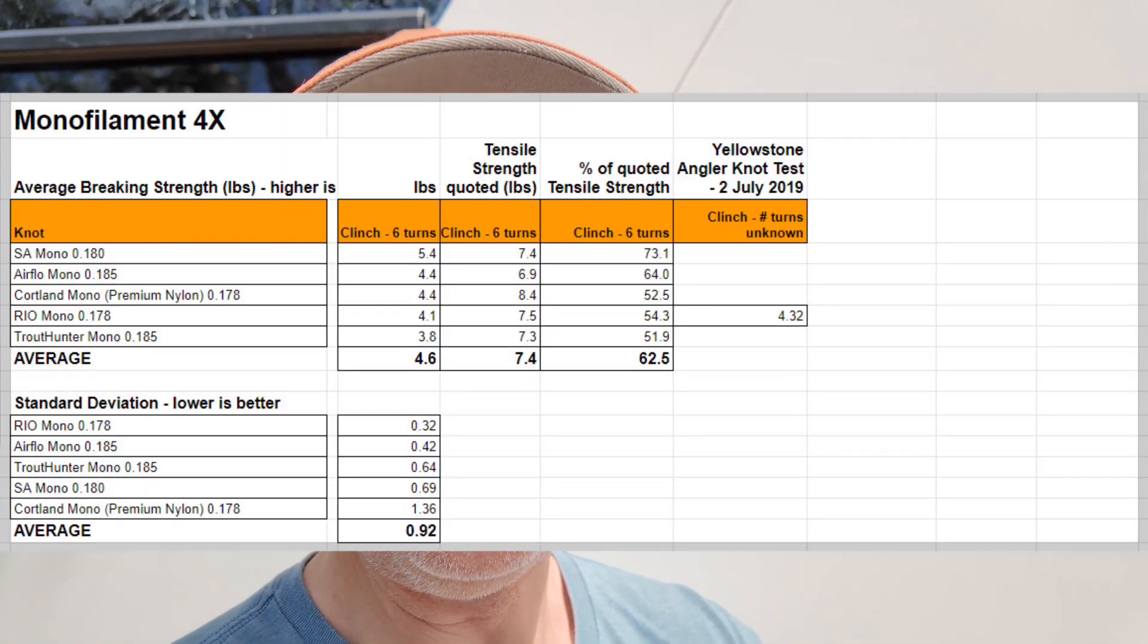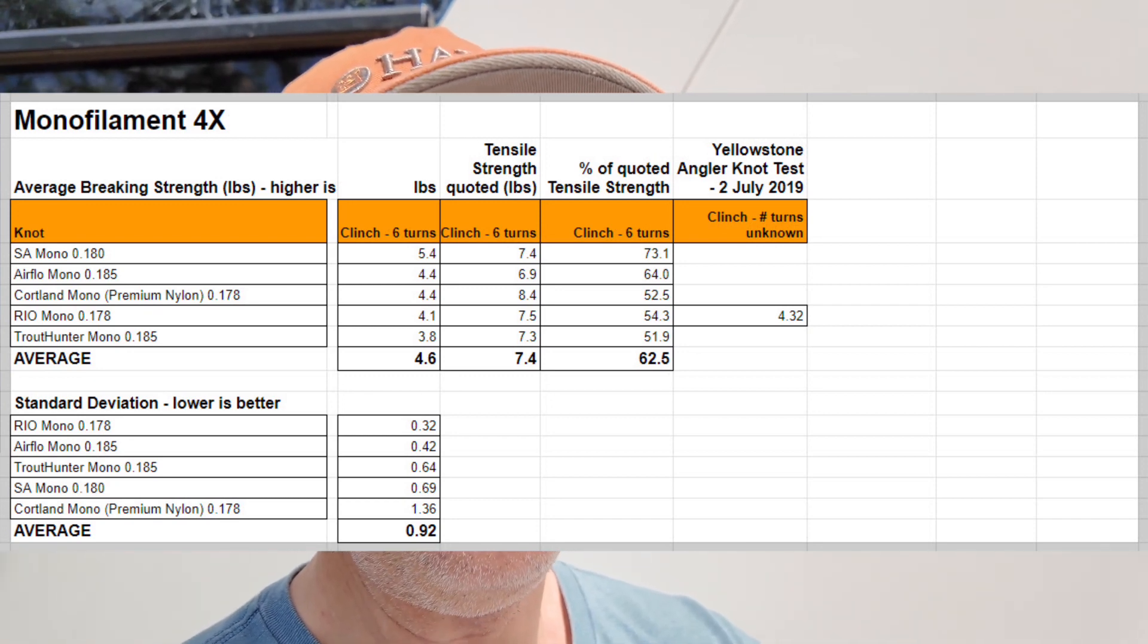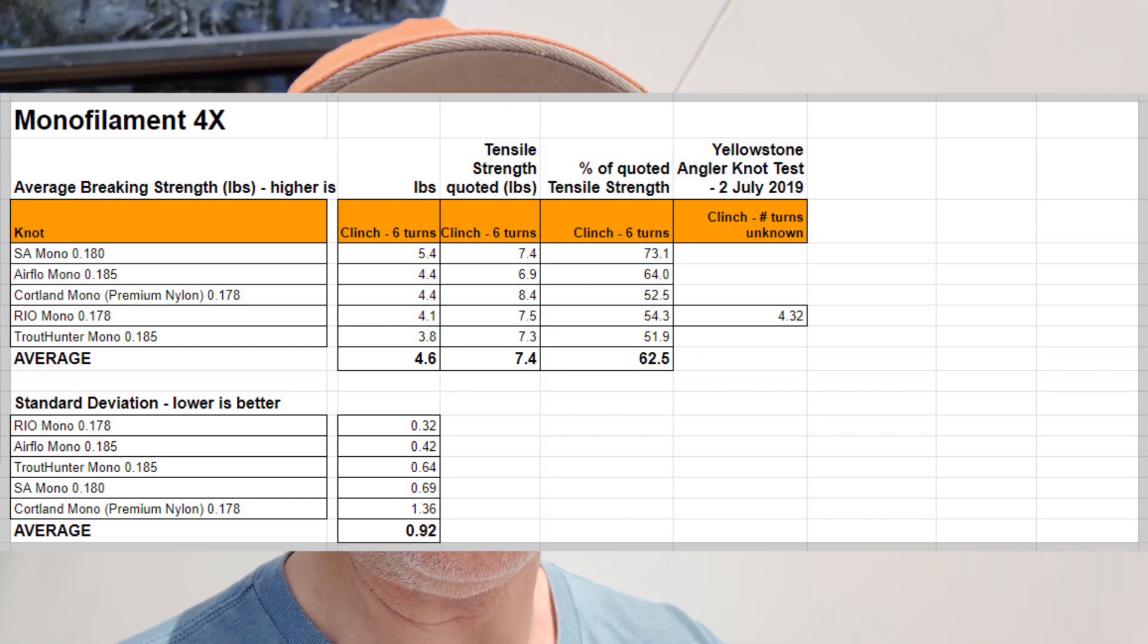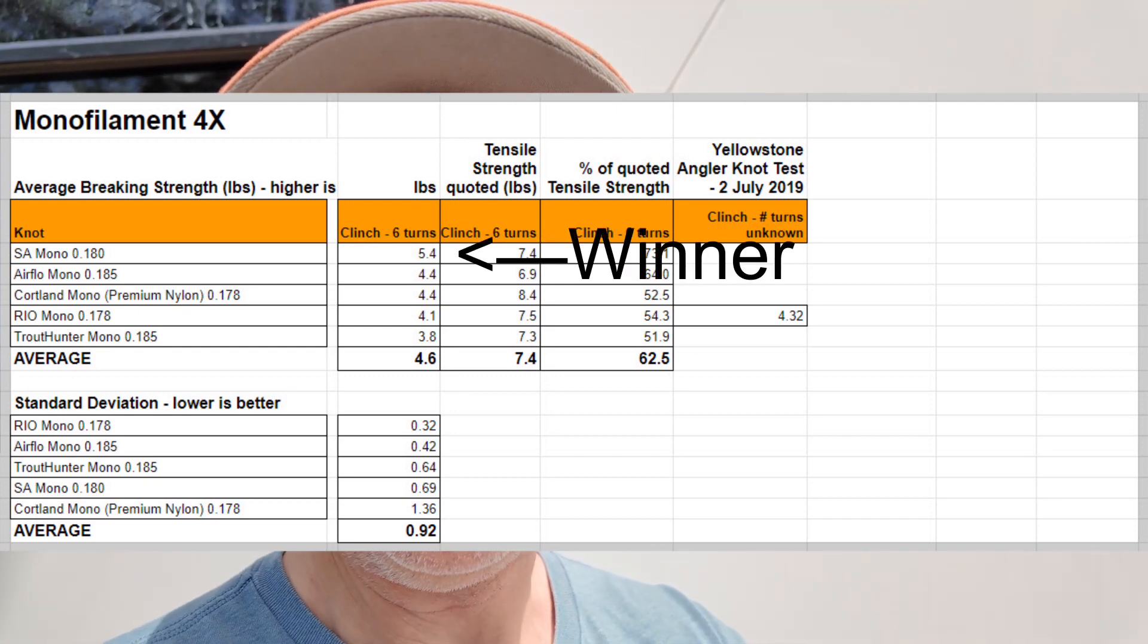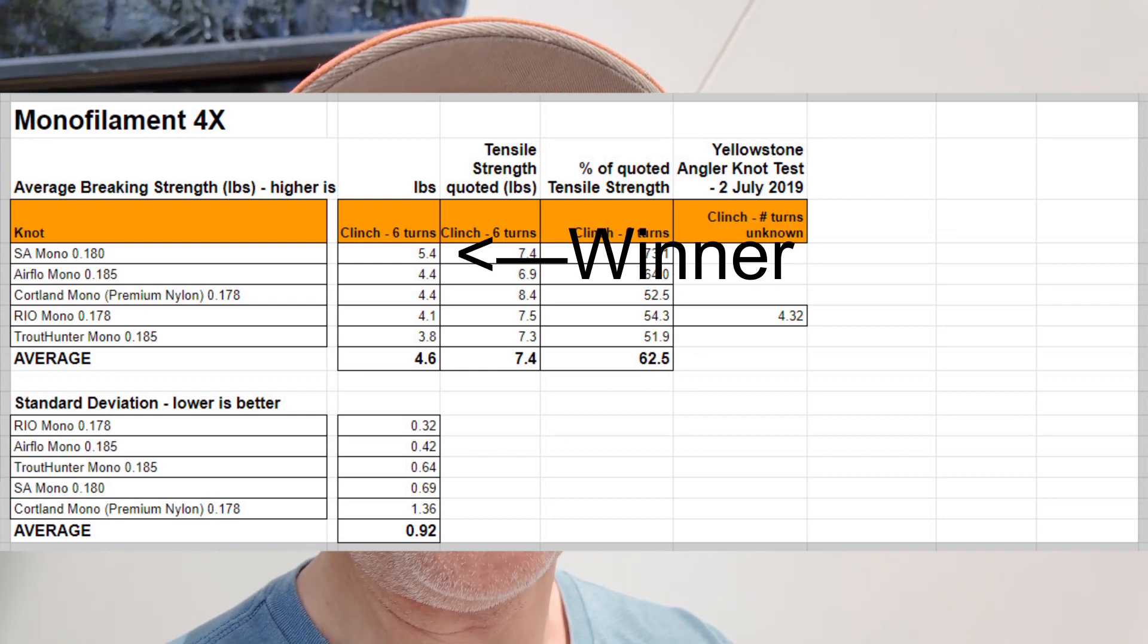And then in terms of mono, I've added in that new Cortland mono, but in terms of mono strength, it's SA that shines with an average wet knot strength of 5.4 pounds.